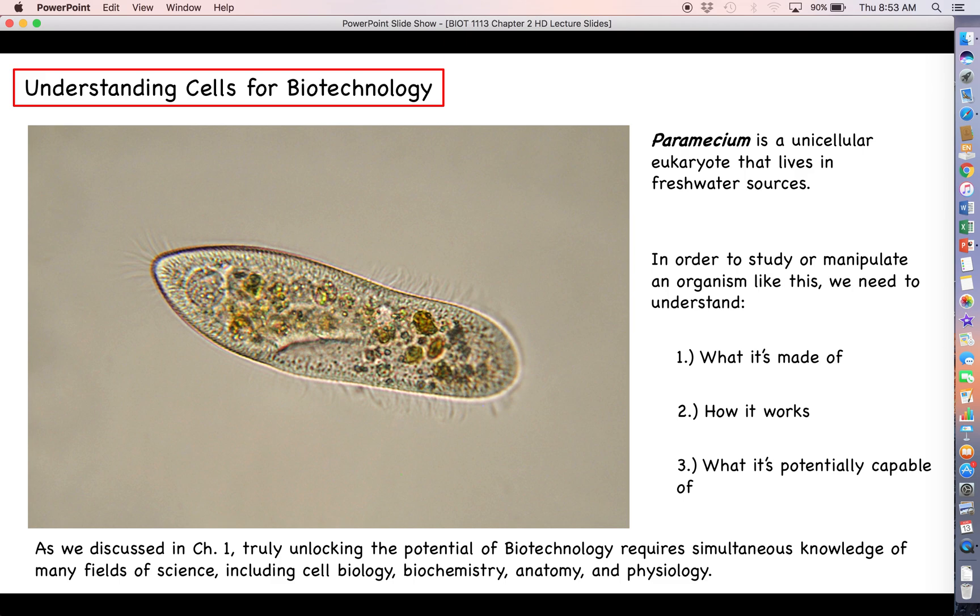Like we talked about in chapter one, really unlocking the potential of biotechnology as a field requires simultaneous knowledge of several different scientific fields. This includes cell biology, which is a lot of what we'll talk about in this chapter, biochemistry which we'll get later in the course, and anatomy and physiology. If you go back to the insulin example from chapter one, insulin functions in human physiology and other mammals as well, so you have to know the physiology of how insulin works to get blood glucose into cells to really understand the purpose of producing it in a biotech setting.